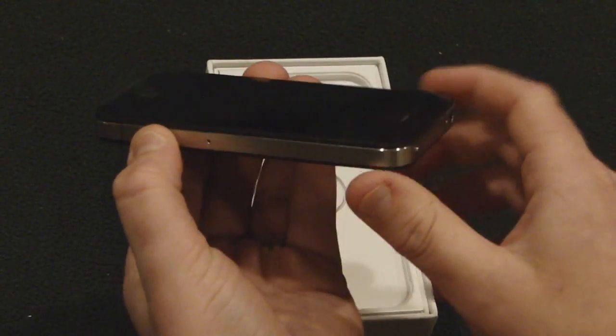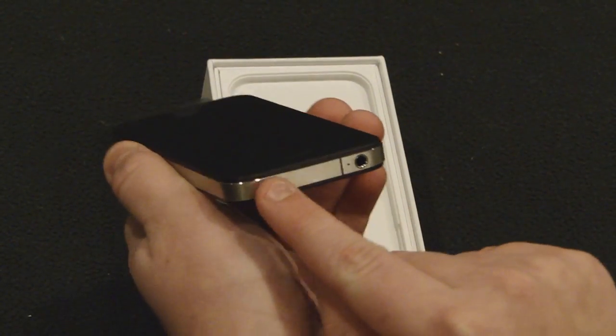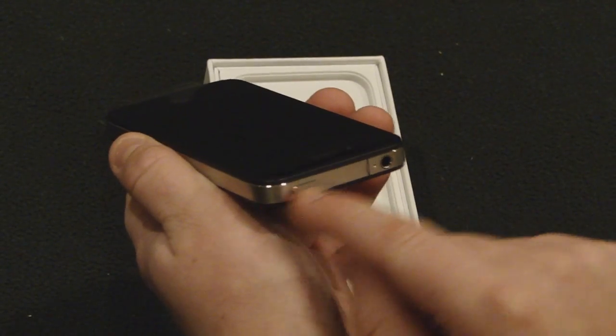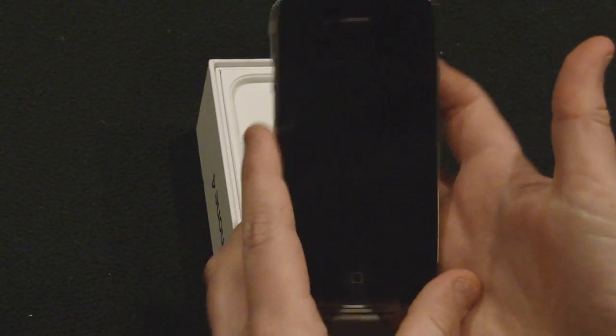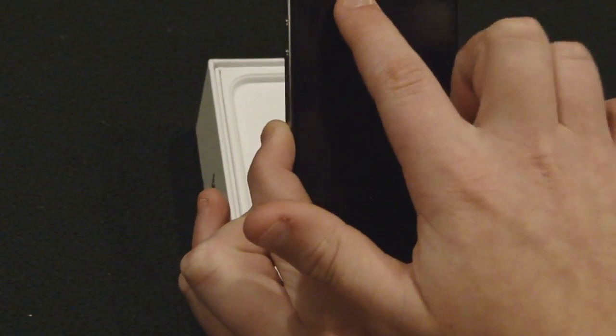The SIM card is over here. Your 3.5mm jack is right there. The sleep, turn on and turn off button is right there. The beautiful screen is right there. The speaker is right there for calls. The front view camera.